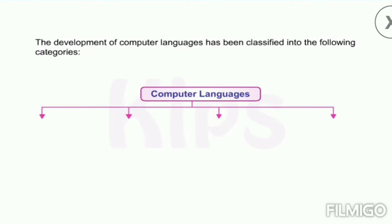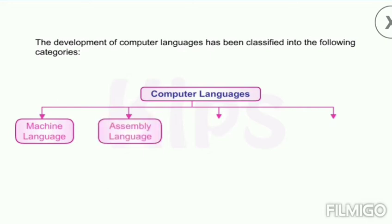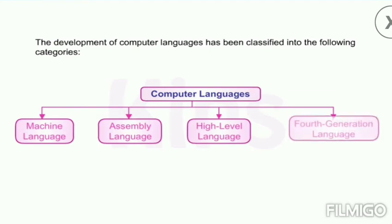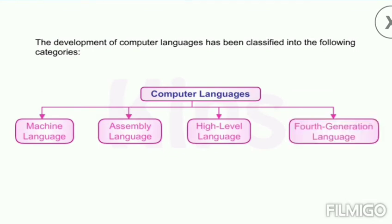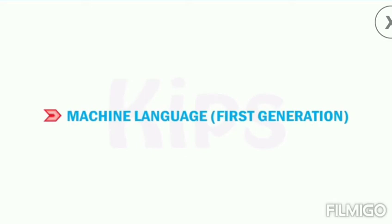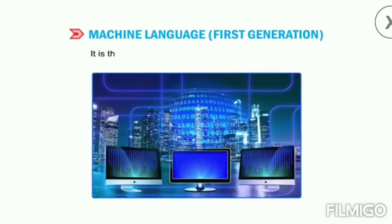The development of computer languages has been classified into the following categories: first generation as machine language, second generation as assembly language, third generation as high-level language, and fourth generation language. Let's learn about machine language first.